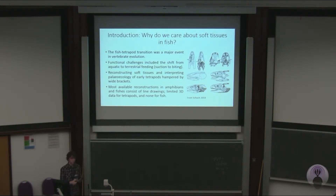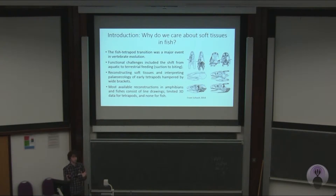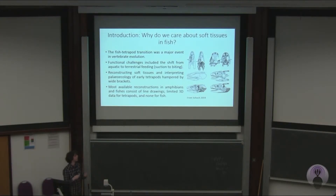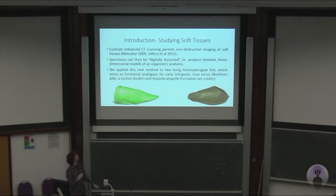Another issue is that the muscle data we do have is mostly in the form of 2D line drawings, and it's very difficult to get information about, say, cross-sectional area from drawings like this. There is three-dimensional data available, but there's not much of it, and it's all from tetrapods. So I'm trying to remedy that.